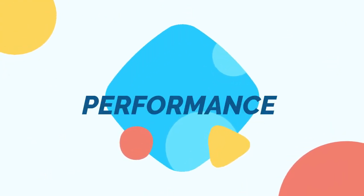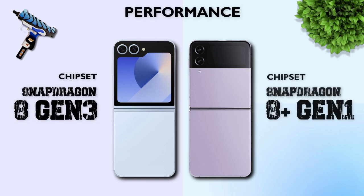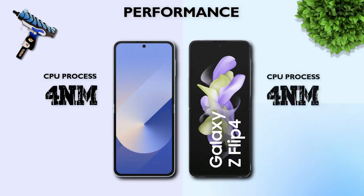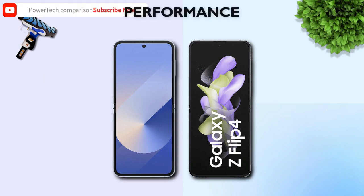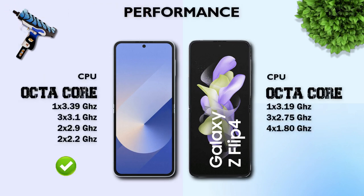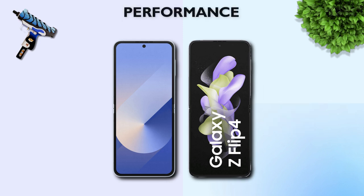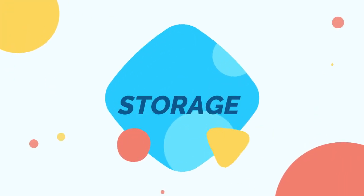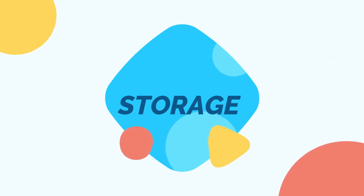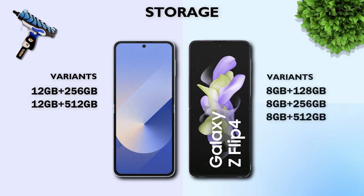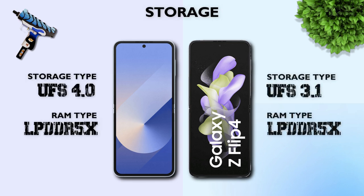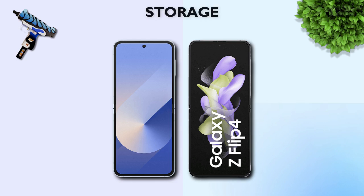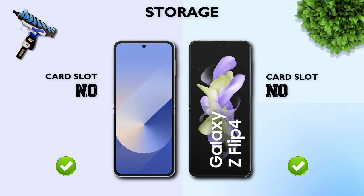Performance — which one is better? Snapdragon 8 Gen 3, better. Both models use a 4nm processor and an octa-core processor. GPU: Adreno 750, better. Both models have the same RAM variants. Storage type: UFS 4.0, better.